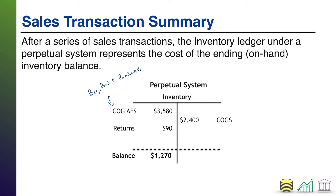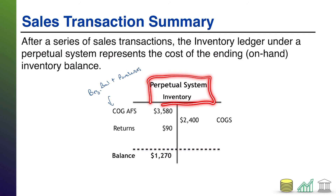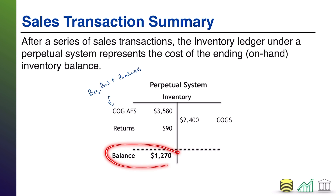The benefit of this perpetual system is that as a result of simply recording the transactions, you already know your ending inventory balance at any given time. The inventory account is being updated for every purchase, every sale, and every adjustment — it's an ongoing update to the balance. That's the benefit of a perpetual inventory system, and that's how you figure out the ending balance. It should always be up to date as a result of transactions.